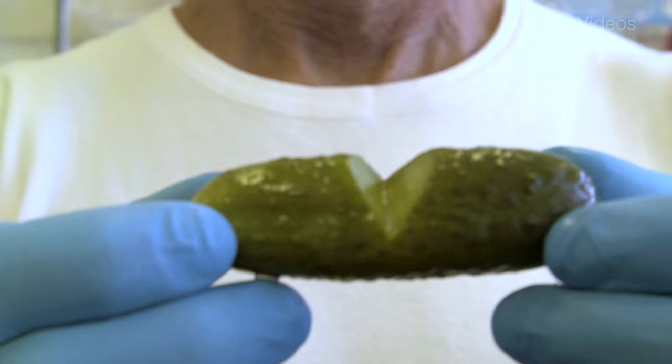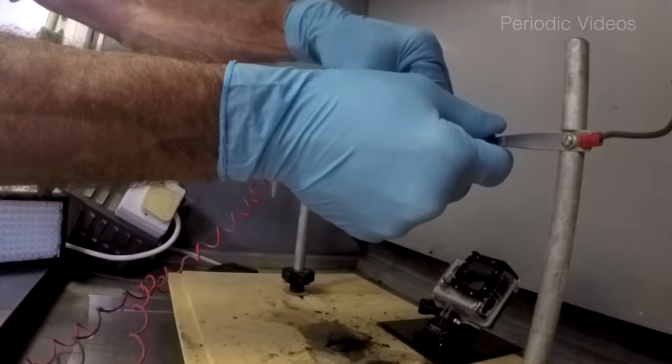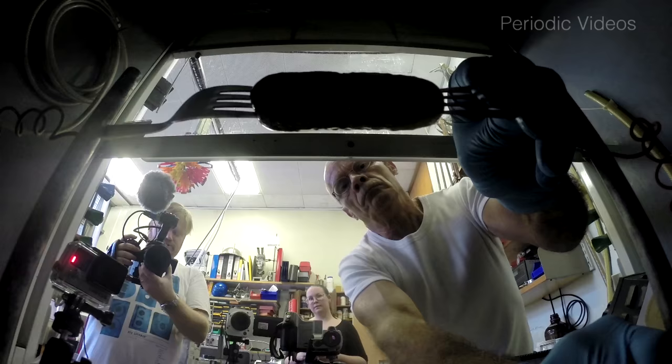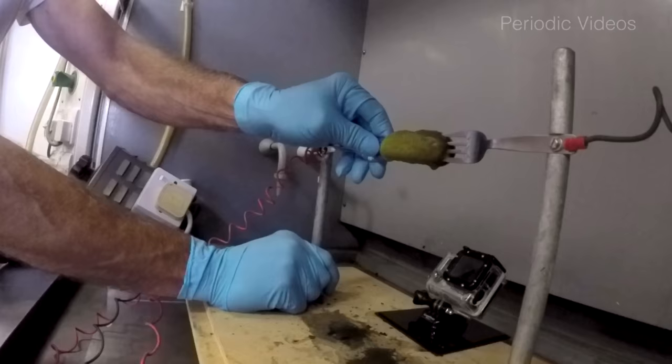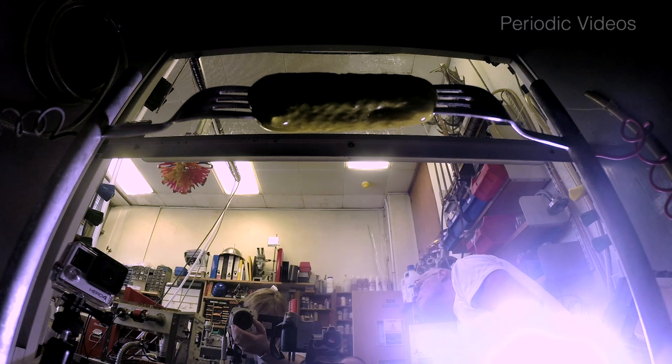So Neil cut out a piece from the middle of the gherkin like this. Our hypothesis was that if we made the gherkin narrow at that point that part of the gherkin should get hotter. Because it's thinner it will conduct electricity less well so it has higher resistance and the heating effect is related to both the current and the resistance.